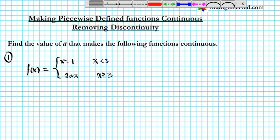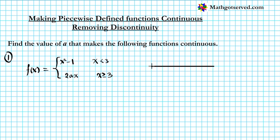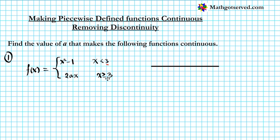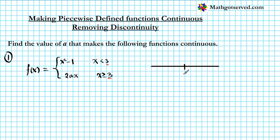This is not a complicated problem at all. All you need to know is where the partition is and which function lies where. The break happens at 3 — you can see the 3 there, it comes up in both pieces. Since the break happens at 3, our partition is going to be at 3. To the left side we have one function, and to the right side we have a different function.